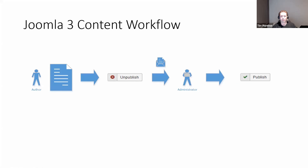Looking at Joomla 3 workflow, out of the box Joomla 3 has very simplistic workflow. On a basic level, you can configure it so that you have an author that creates an article and they submit it. It goes into the unpublished state by default, and then that can trigger an email to an administrator — that would be all the people in the administrators group, not just one individual person.